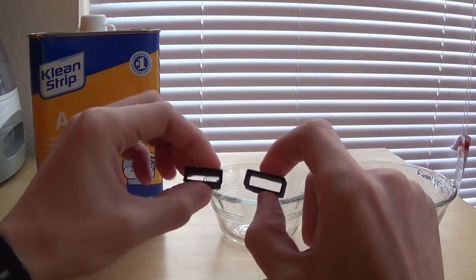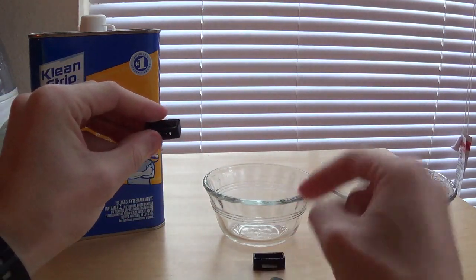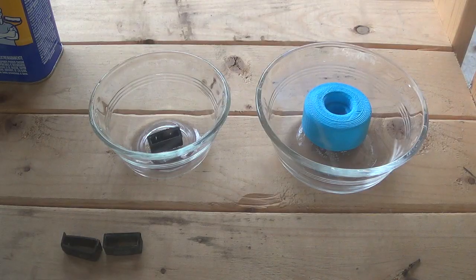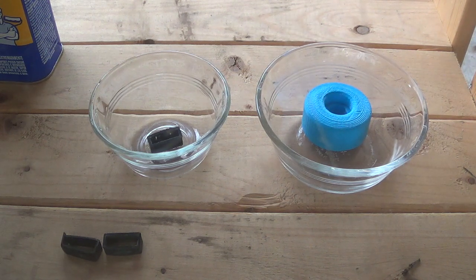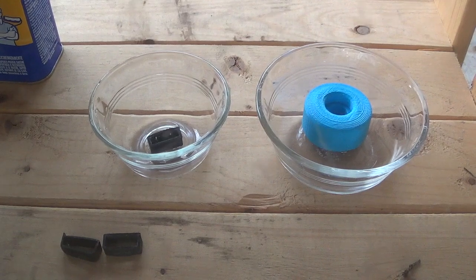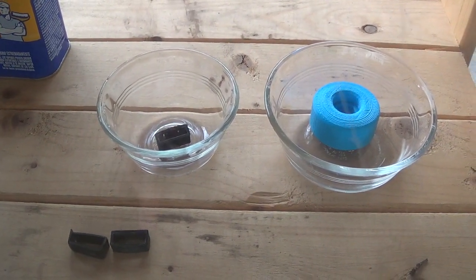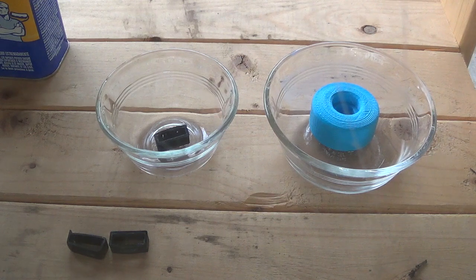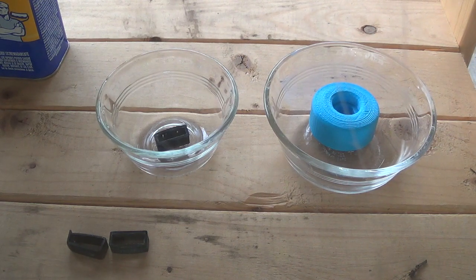Let's get started. Always remember to use acetone outside where the vapors can escape. You don't want to do it inside because it can be harmful to breathe in, so just keep that in mind. Now we're just going to pour a little bit of acetone in both the ABS and PLA containers.